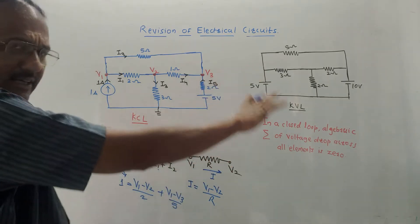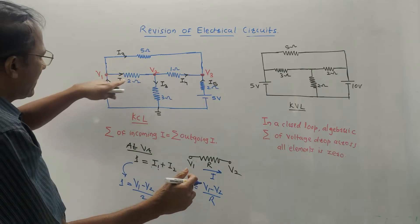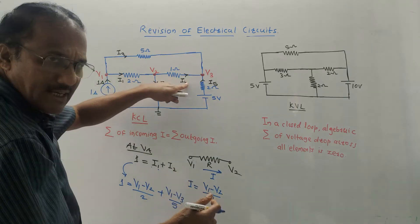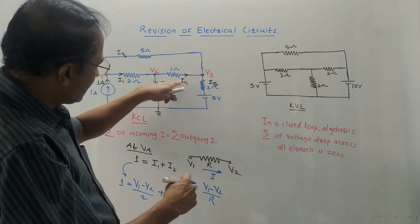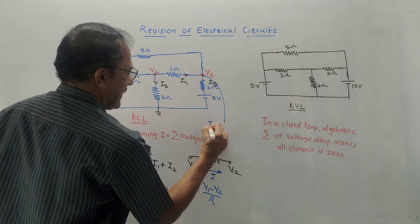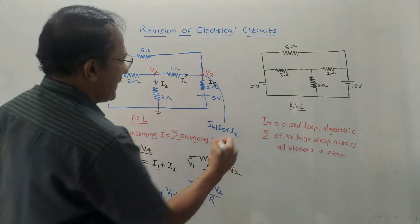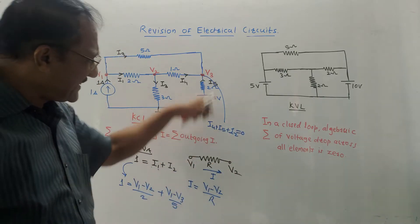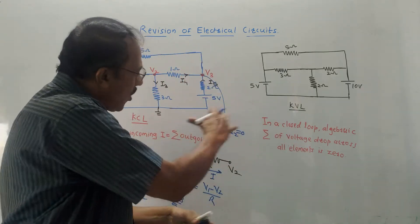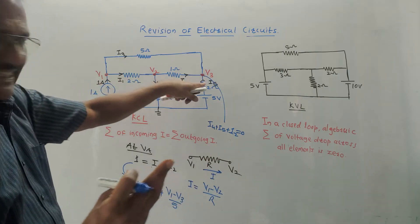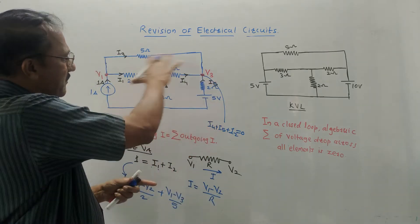Applying KCL at V2: I1 equals I3 plus I4. For node V3: I4 plus I5 plus I2 equals zero. Express every current in terms of voltage, as shown for node V1, and apply the same trick to all nodes. You will get three equations by applying KCL at three nodes. Solve those equations on the calculator to get the current passing through each element.